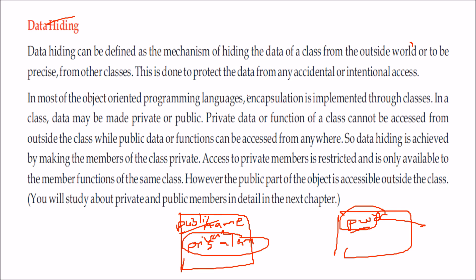In most object-oriented programming languages, encapsulation is implemented through classes, as we have seen. In this class, we have public and private access specifiers. This private data can only be accessed inside the class, while public data can be accessed from anywhere. That is how we achieve data hiding. Access to private members is restricted and is only available to member functions of the same class, but the public part of the object is accessible outside the class as well.